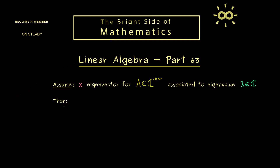So this is the assumption here. We have the important eigenvalue equation which reads Ax = λx. So we know the matrix operation for eigenvectors is very simple, because it's only scaling.